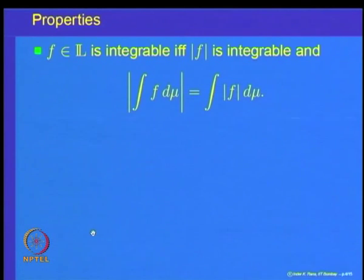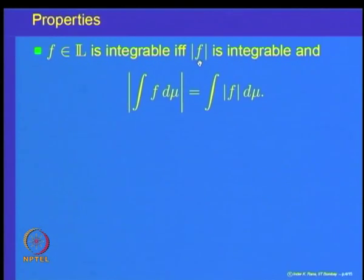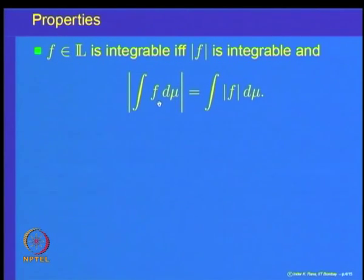The first important property we observed: a measurable function f is integrable if and only if |f|, which is a non-negative function, is integrable. That means to check whether a measurable function is integrable or not, it is enough to look at the integral of |f| and see whether that is finite or not.